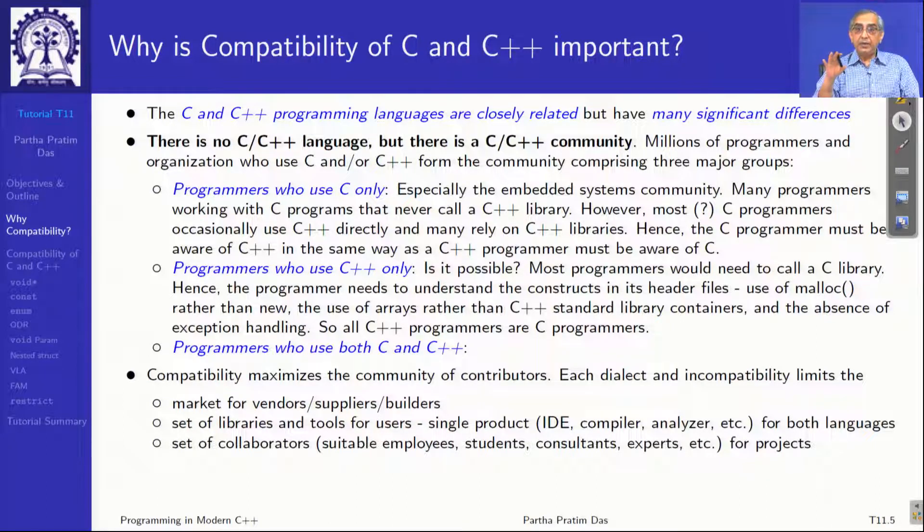Though there is no language as C/C++, there is a C/C++ community of developers, thousands of them, probably lakhs of them, who program in C as well as C++ in different extents. We can broadly categorize them into three groups. One is programmers who use C only. There is a large group of programmers who use only C, primarily the embedded systems community.